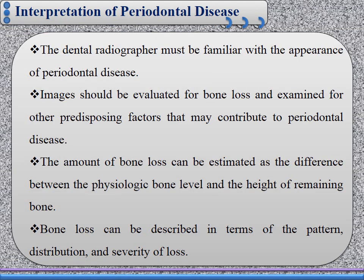Interpretation of periodontal disease. The dental radiographer must first be familiar with the normal appearance of the periodontium in order to distinguish it from the appearance of periodontal disease. The image should be used to evaluate bone loss and examine other predisposing factors that may contribute to periodontal disease, such as calculus, overhanging amalgam, or other causes. The amount of bone loss can be estimated as the difference between the normal physiological bone level and the height of the remaining bone.